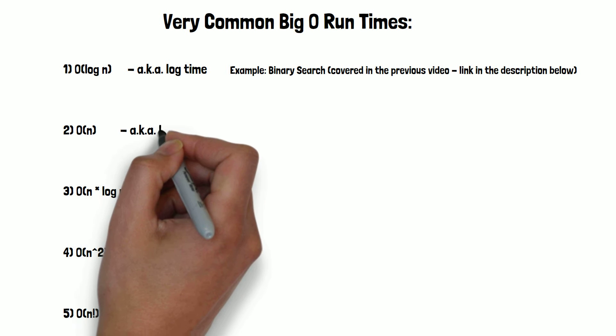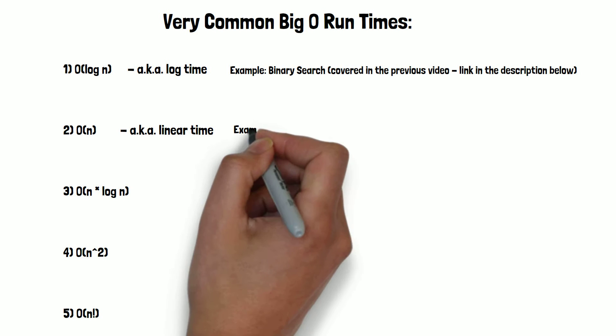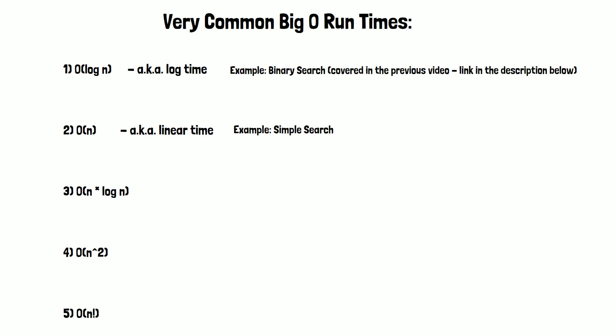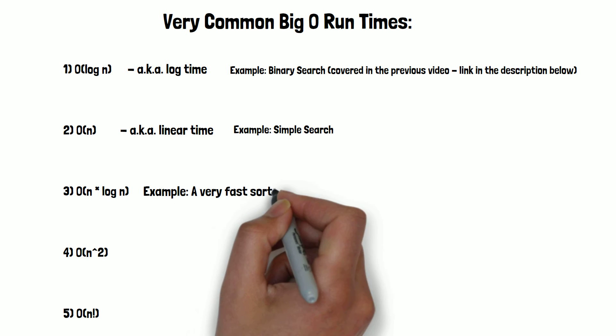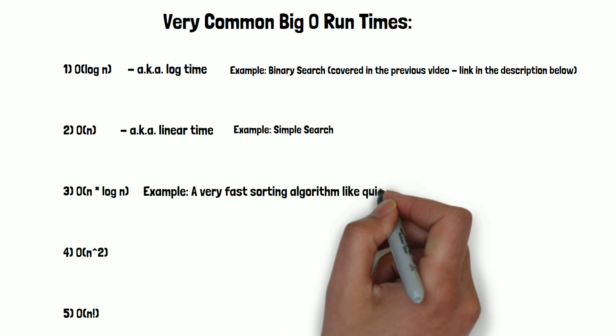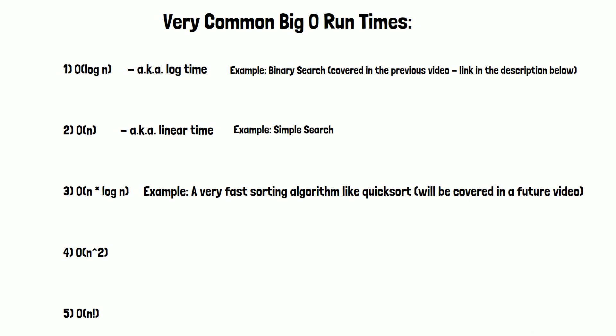Next, we have O(n), also known as linear time. A good example of this is the simple search. Third is O(n times log n). An example of this is a very fast sorting algorithm, like quick sort, which we will be discussing in my future videos as well.